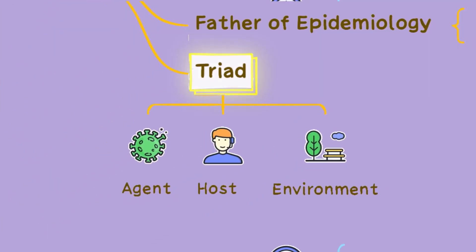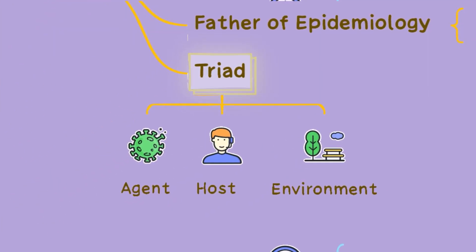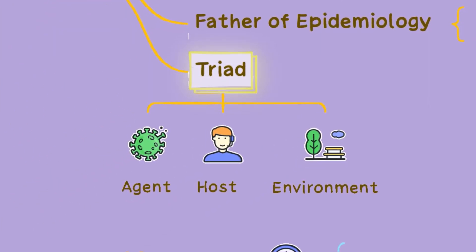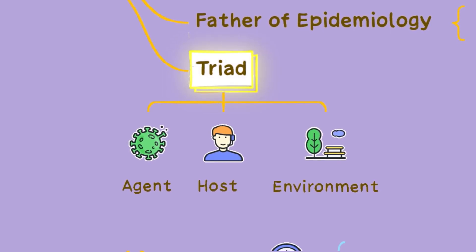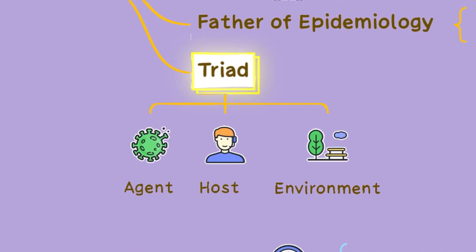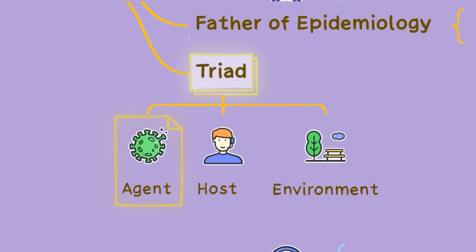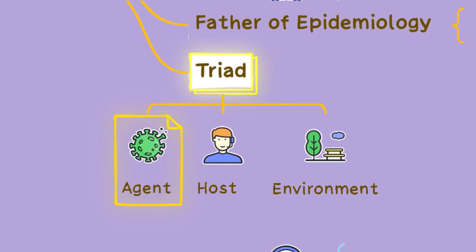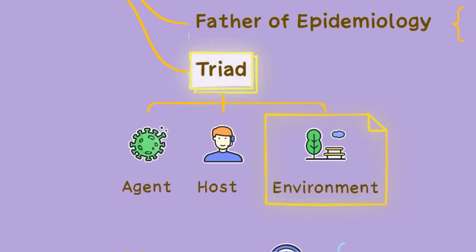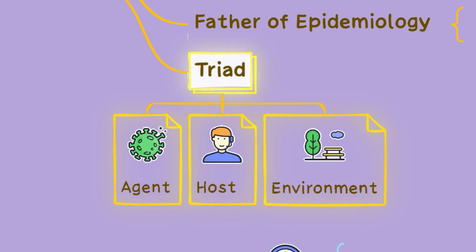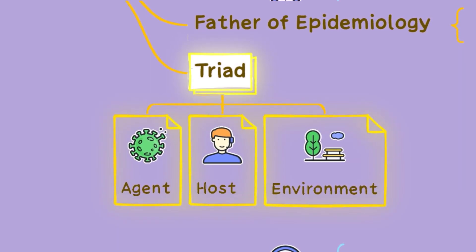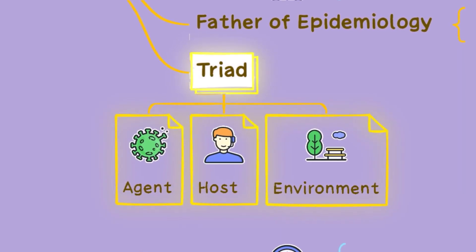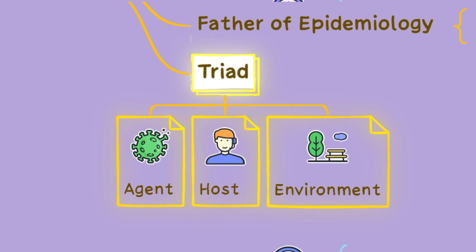The epidemiological triad is a conceptual framework used to understand the complex interplay between three key elements in the development and spread of diseases. The interaction and interdependence of these three components play a crucial role in the occurrence and spread of diseases.